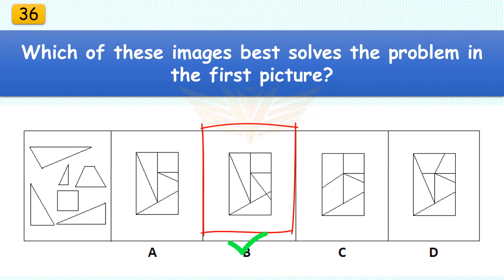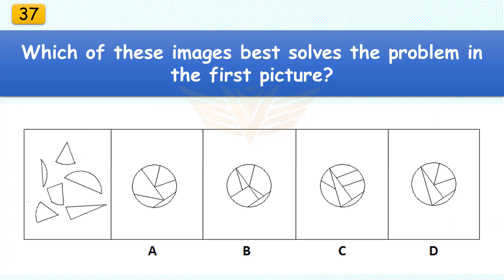Which of these images best solves the problem in the first picture? The correct answer is A. There are six pieces in the assembled puzzle, four of which are triangles.